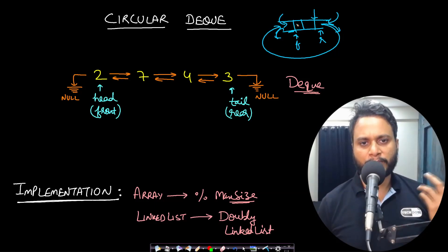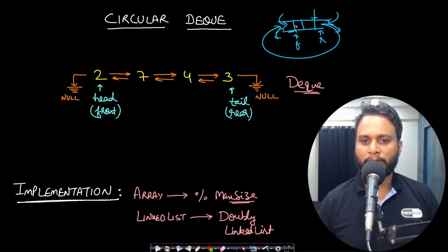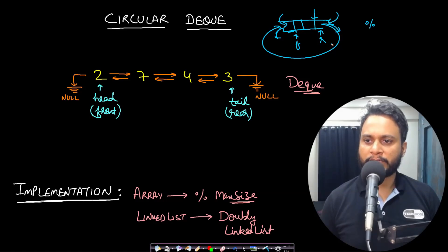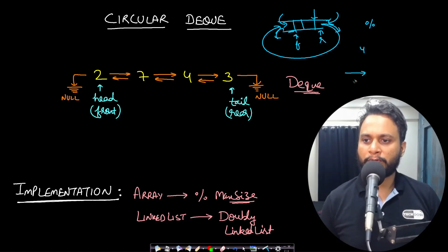You can represent a circular deque using an array or a linked list. If you use an array, you have to use a mod operation so that you don't overflow the size. For example, if the maximum size is 4 — indices 0, 1, 2, 3 — and you reach index 3,